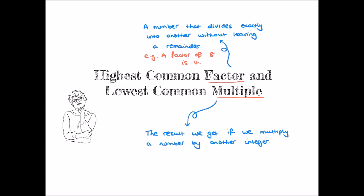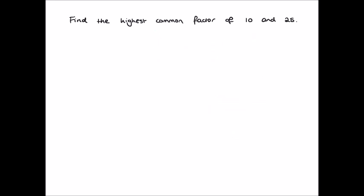Now there are a couple of techniques for finding highest common factors and lowest or least common multiples. We can do it by observation. Let's have a look at an example. We begin by finding the highest common factor of 10 and 25. The word 'highest' tells us we want to find the largest number that divides into both 10 and 25 without leaving a remainder. This word 'common' is because it's common to both. We could do this by listing out the factor pairs of 10 and 25.